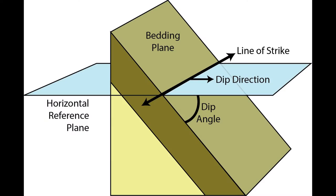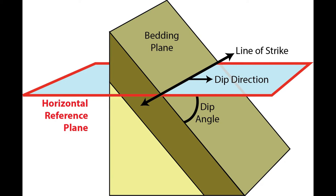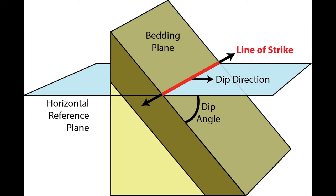A complete planar orientation measurement consists of three parts: strike, dip angle, and dip direction. With planar measurements, the horizontal reference plane is really important. Strike is the directional bearing of the intersection line between the plane being measured and the horizontal reference plane. Because it is a line, the bearing of strike can have two possible directions that are 180 degrees from each other. Both are correct.